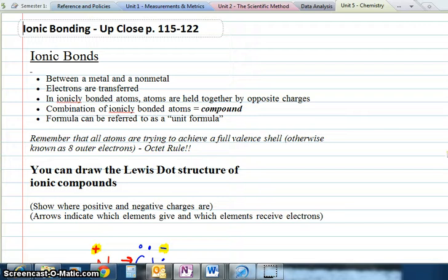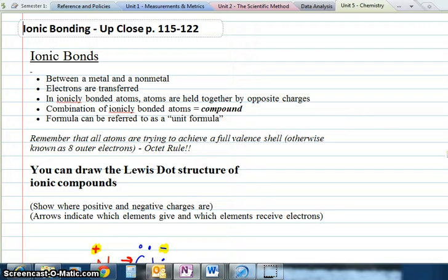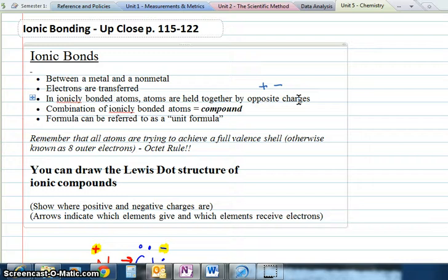For ionic bonding, there's some things to know. They're always between a metal and a nonmetal, opposite sides of the table. Electrons are transferred. In ionically bonded atoms, the atoms are held together by opposite charges, positive and negative. They attract like magnets. We call the combination a compound and the formula a unit formula.